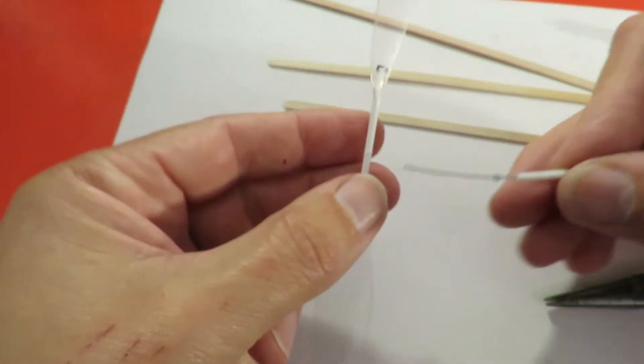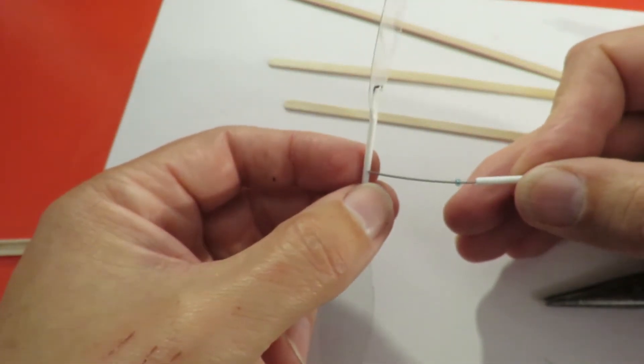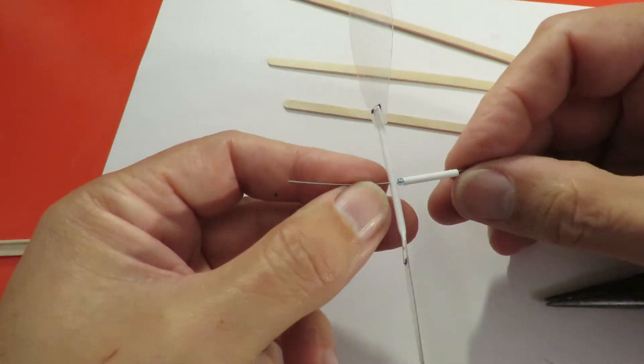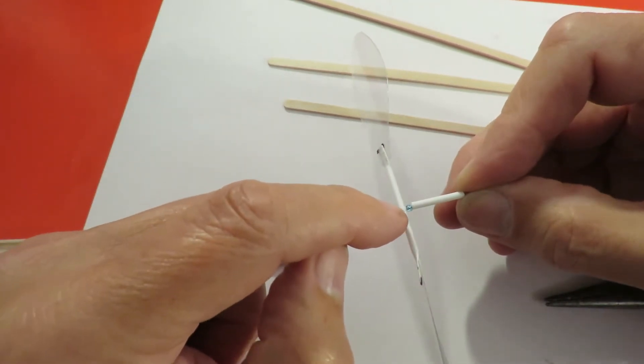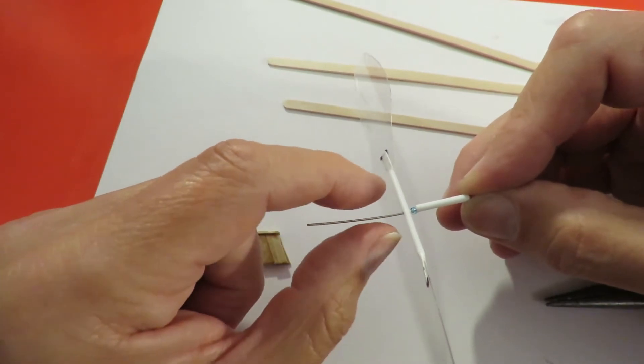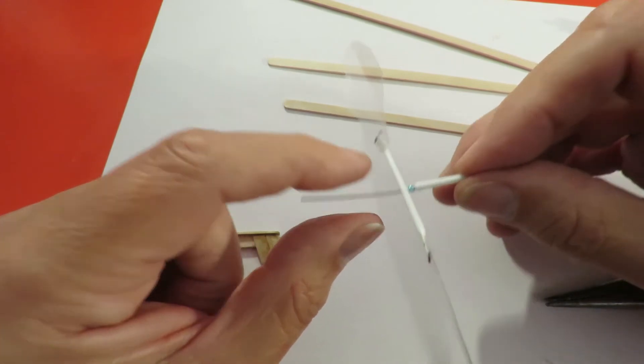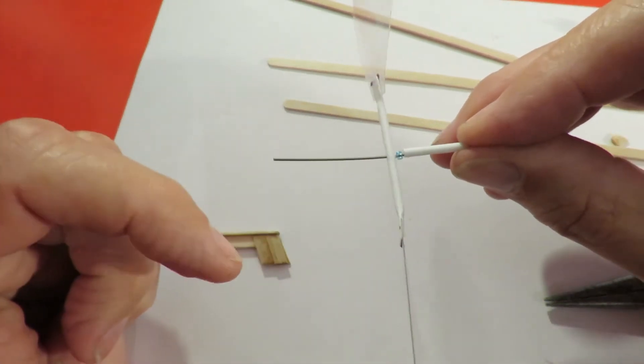So that's going to go through there. And then I'll bend this up at right angle so it goes along the shaft, and either tape it or glue it in place. Then that'll be our propeller.